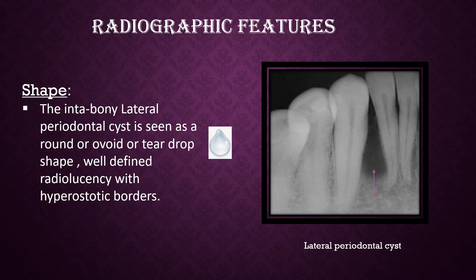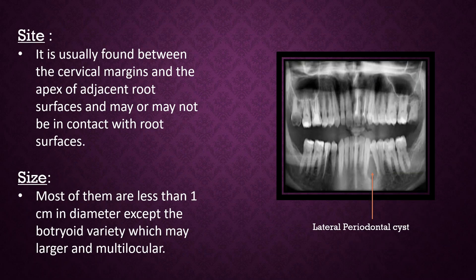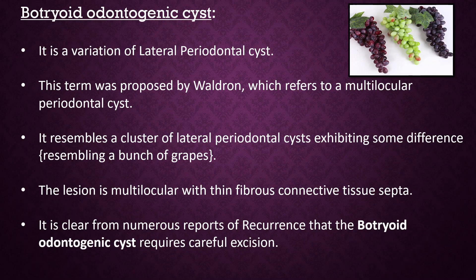Radiographic Features: The intra-bony lateral periodontal cyst is seen as a round, ovoid, or tear-drop shaped, well-defined radiolucency with hyperostatic borders. It is usually found between the cervical margins and the apex of the adjacent root surfaces, and may or may not be in contact with root surfaces. Most are less than 1 cm in diameter, except the botryoid variety which may be larger and more than 2 cm in diameter.